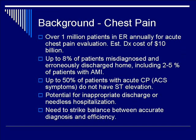Over 1 million patients in the ER present annually for acute chest pain. The estimated annual cost for diagnosis alone is $10 billion. 8% of patients are routinely misdiagnosed and discharged home erroneously, including 2-5% of patients with AMI.